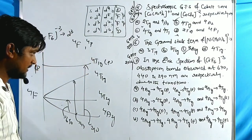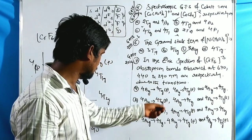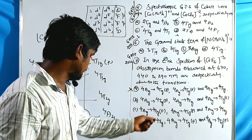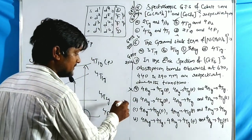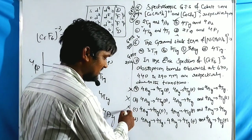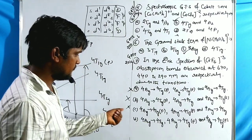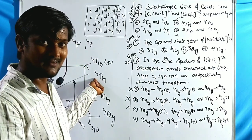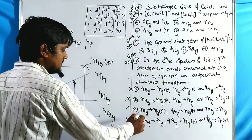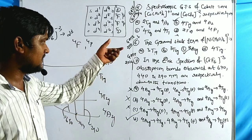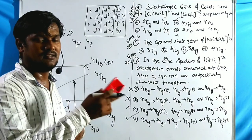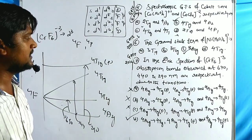Checking the options for Problem 7: the correct assignment is ⁴A₂g → ⁴T₂g (670 nm), ⁴A₂g → ⁴T₁g(F) (440 nm), ⁴A₂g → ⁴T₁g(P) (290 nm). Option A is correct. This question appeared in December 2011/2013 and again in GATE 2016.